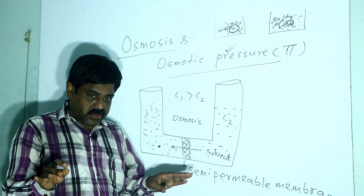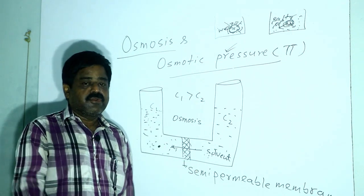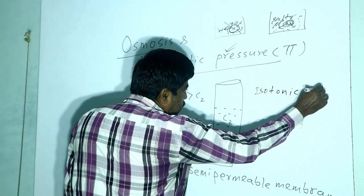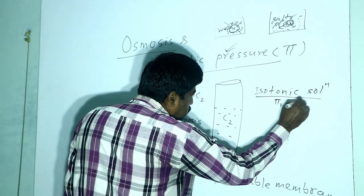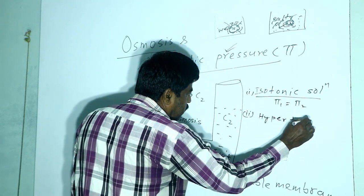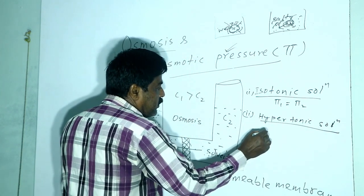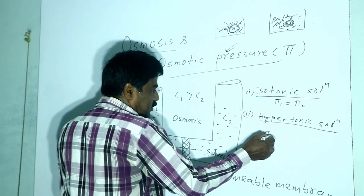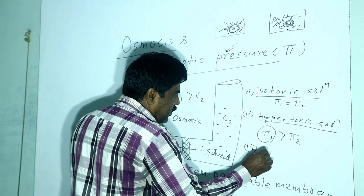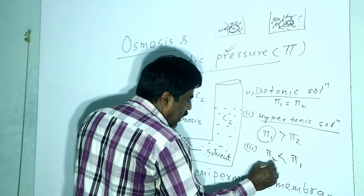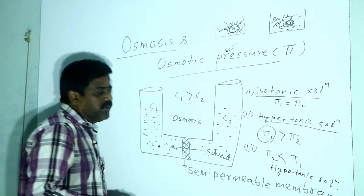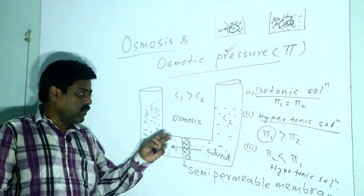Let us consider some terms involving osmosis. When two solutions have the same osmotic pressure, they are called isotonic solutions, meaning π₁ = π₂. In the case of hypertonic and hypotonic solutions — if the osmotic pressure of the first solution is greater than that of the second, the first is called hypertonic and the second is called hypotonic. These terms describe the relative magnitude of osmotic pressure.